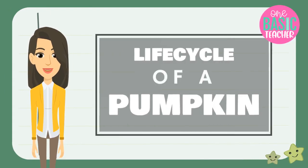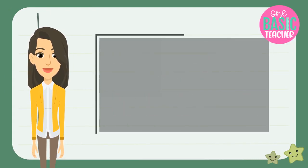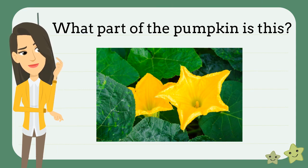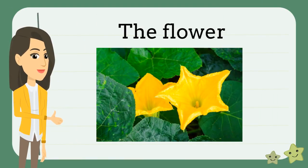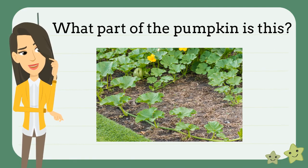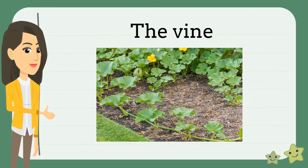Now that we've learned about the life cycle of a pumpkin, let's see if you can identify the parts of a pumpkin. What part of the pumpkin is this? What do you think? You're right! It's the flower! What part of the pumpkin is this? What do you think? You're right! It's the vine!